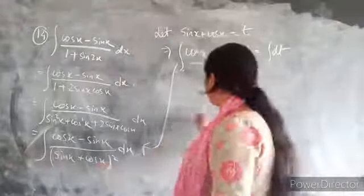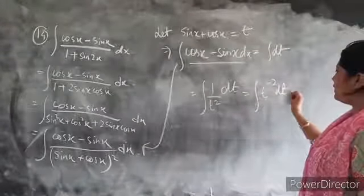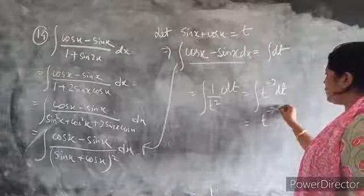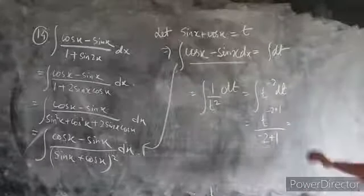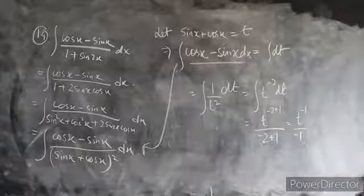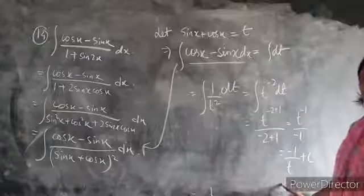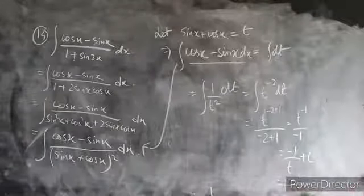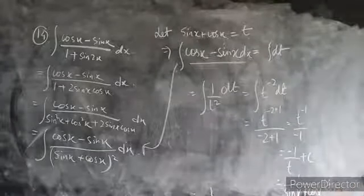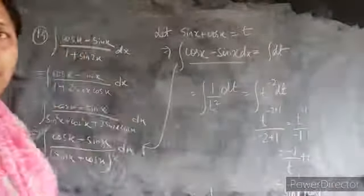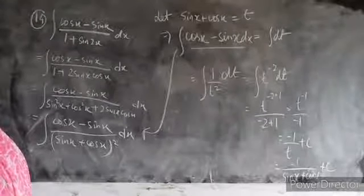This is integration of t to the power minus 2 dt, which equals t to the power minus 2 plus 1 divided by minus 2 plus 1, giving t to the power minus 1 divided by minus 1, or minus 1/t plus c. Substituting back t equals sinx plus cosx, the answer is minus 1/(sinx plus cosx) plus c.